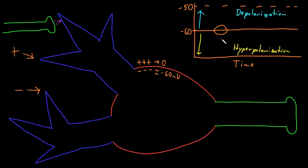Two important properties of graded potentials are that they decay with both time and distance, so their effect is brief and local. The membrane potential changes for a brief time and then returns to the resting potential unless there is more input. Because graded potentials decay with time, if two graded potentials happen separated by enough time, they won't have any effect on each other — if the first depolarization is already fully decayed before a second one occurs, these two had no effect on each other.